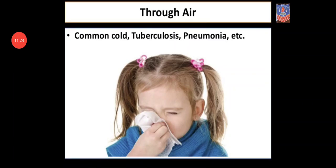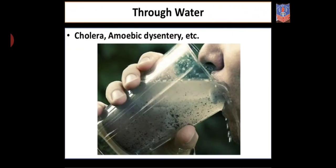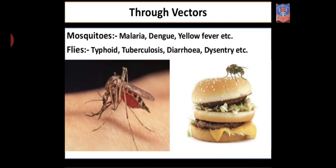You can see the means of spread of diseases in the visual: through air — common cold, tuberculosis, pneumonia; through water — cholera and amoebic dysentery; through vectors, that is through mosquito bites and flies, various diseases can be caused.